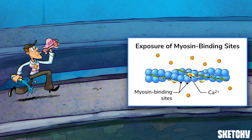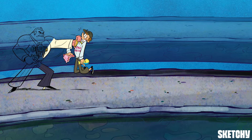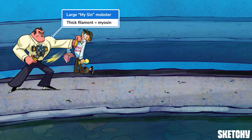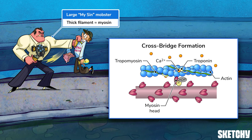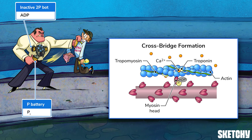The thick gangster who just left the myosin club represents the thick filaments in a sarcomere, which are made of myosin protein. As soon as binding sites on the thin filaments are exposed, the heads of myosin proteins latch on and create a cross-bridge — just like how this myosin mobster reached in to grab hold of the pendant around Slim's neck as soon as it was exposed. At this point in the cross-bridge cycle, the thick filament is bound to an ADP and an inorganic phosphate, represented by the bot with two P batteries.